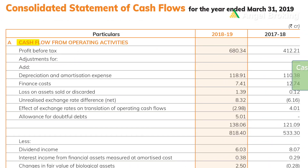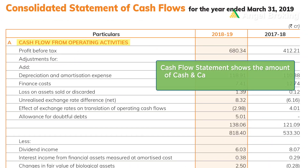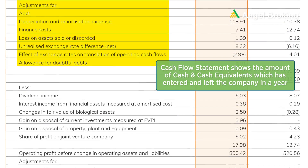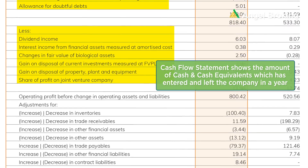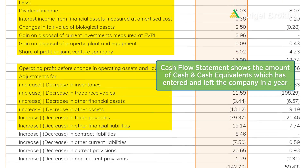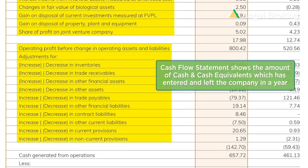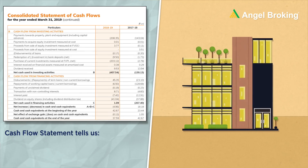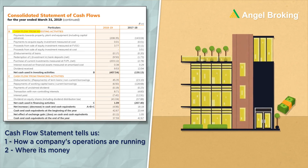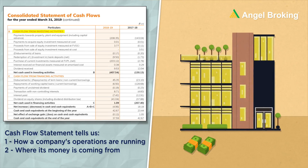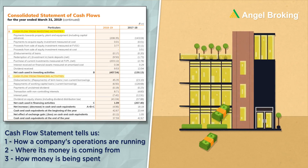Last is the cash flow statement. It shows the amount of cash and cash equivalents which has entered and left the company in a year. From this, you will get to know how the company's operations are running, where the money is coming from, and how money is being spent.